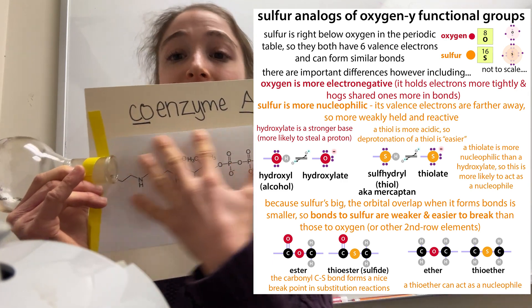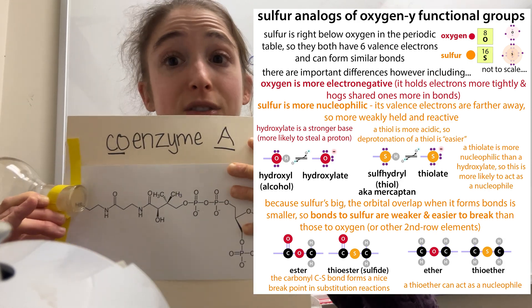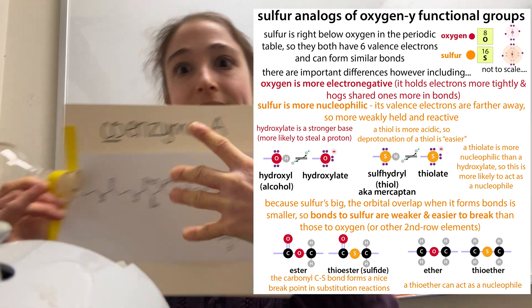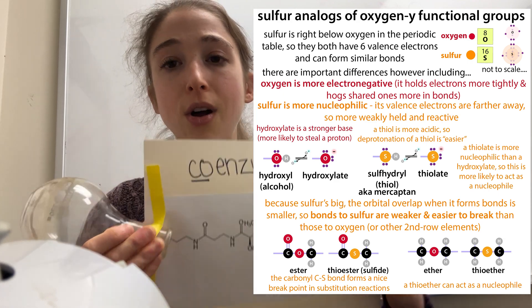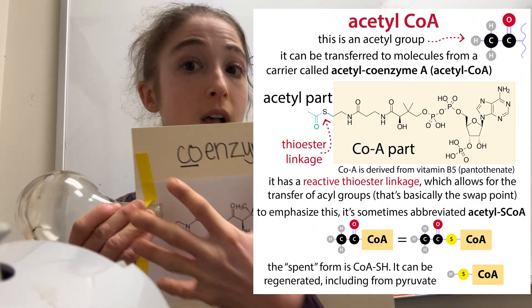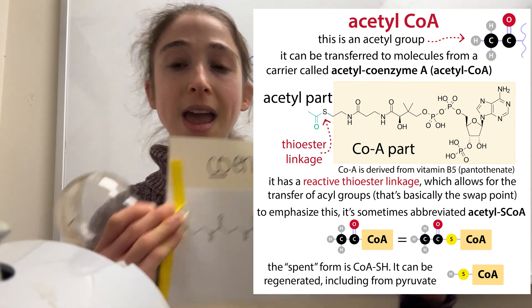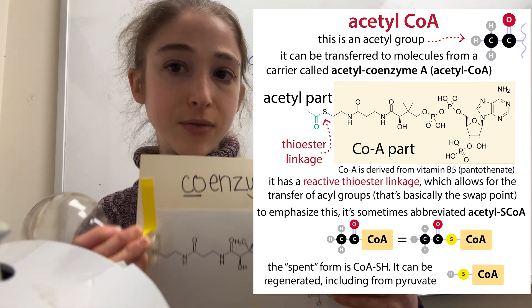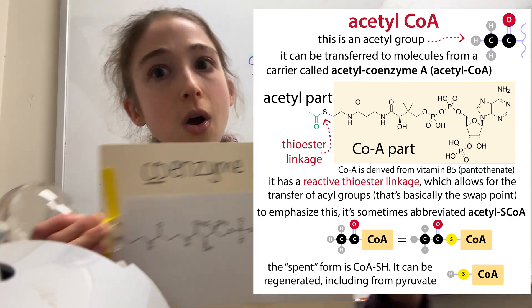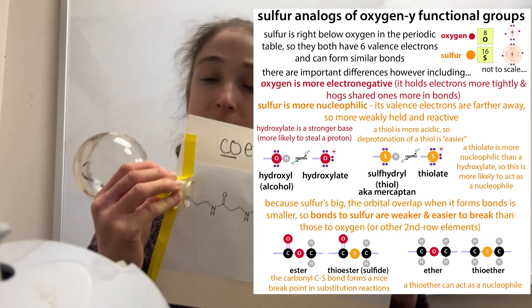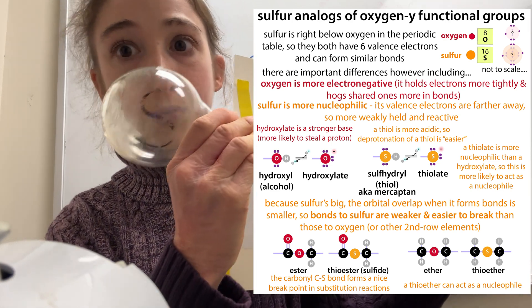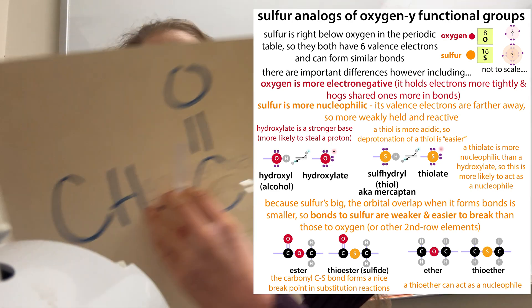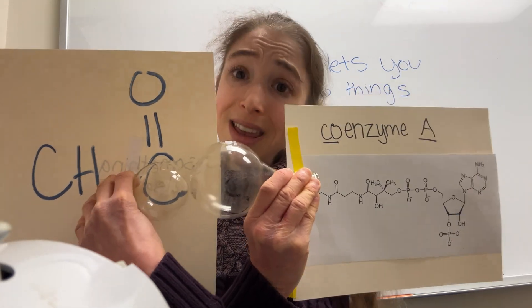The coenzyme A part — this whole vitamin B5 part — makes it great for holding onto the part that's holding onto the thing you really care about. Rather than having these groups transferred on different proteins, you can transfer them on this molecule that has a smaller soluble form, and then use the same cofactor for a variety of different things. You see coenzyme A show up all over the place, as well as similar cases where you're using the ability of sulfur to be nucleophilic — but more importantly, its ability to form bonds that are not so effective, and therefore easier to make and easier to break. So we can do that swappage.